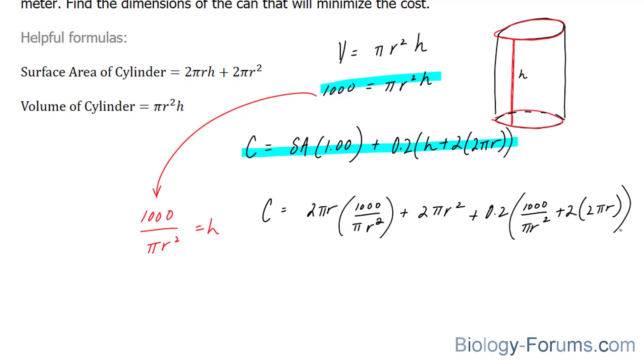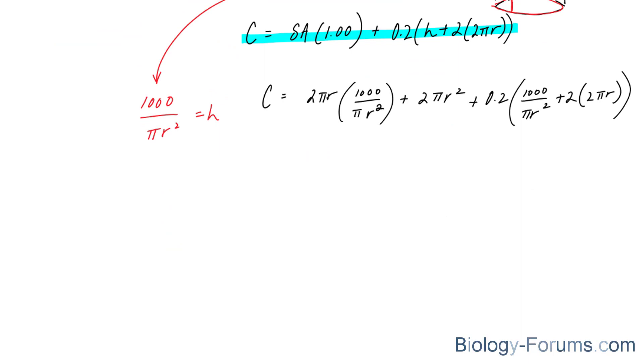The next thing that I'll do is simplify. You'll notice that this r will cancel out, this pi will cancel out with one of these r's and this pi, leaving you with C equals 2000 over r. And we can expand this, and if we do that, we end up with the following.